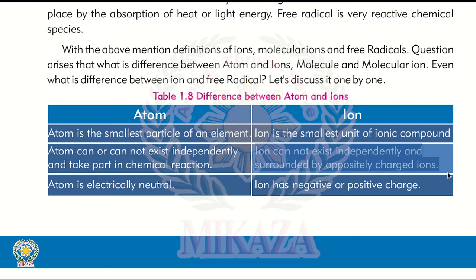Ions, because they lack neutrality, have a nature that they want to become neutral. So if it is a negative ion, it will attract a positive ion, and the positive ion will attract the negative ion, because opposite poles attract each other. Due to this attraction they are unable to exist independently and are always surrounded by oppositely charged ions. An atom is electrically neutral — if the number of electrons and protons are the same, it is neutral. An ion, however, has a negative or positive charge.